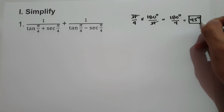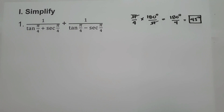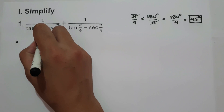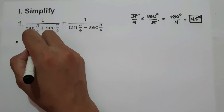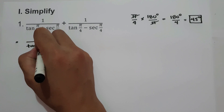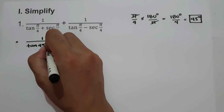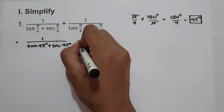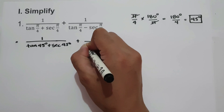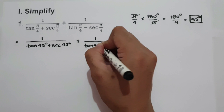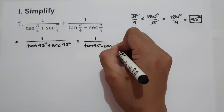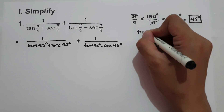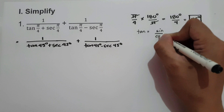So 45 degrees is the value of π/4. Let us substitute this into the given expression: 1 over tangent(45°) plus secant(45°), plus 1 over tangent(45°) minus secant(45°). We know that tangent is sine over cosine.